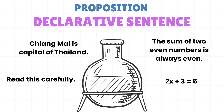Okay. Propositions are declarative sentences — like 'This is the capital of Thailand.' Okay, this statement is a declarative statement, true or false. It's going to be either true or false. Now read this carefully — this is not a declarative sentence. Read this carefully: that proposition. The sum of two even numbers is always an even number. So the declarative sentence — two plus three equals five.